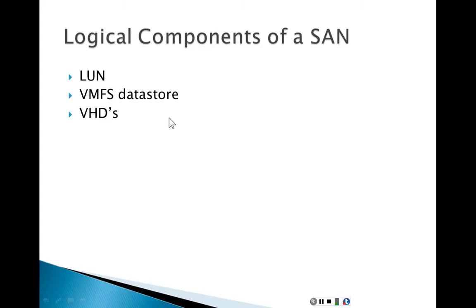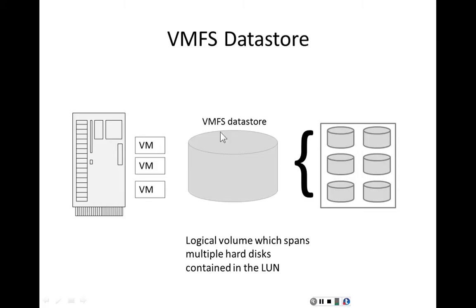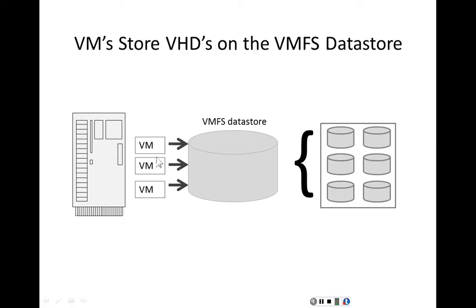Now let's look at the logical components of a storage area network: logical unit number, VMFS datastore, and virtual hard disks. A disk array contains disks, and a logical unit number is a container that aggregates those disks into one logical unit the ESXi host can connect to. A VMFS datastore is a logical volume spanning the multiple hard disks contained in the logical unit number. Virtual machines store virtual hard disks to the VMFS datastore, which sends the data to the hard disks on the disk array.